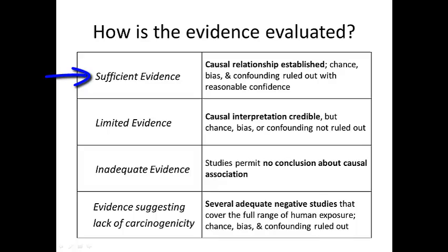For sufficient evidence, we're looking for a believable and consistent pattern across a number of studies pointing to an increased risk of cancer, but where chance, bias, and confounding can be ruled out with reasonable confidence. This is really the crux of looking at epidemiologic data, because even if there is a pattern, if we can't rule these things out, it still puts the evidence into the limited category.